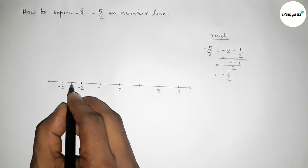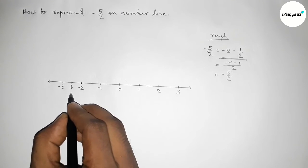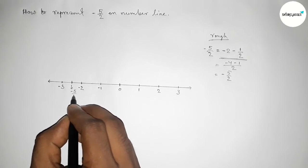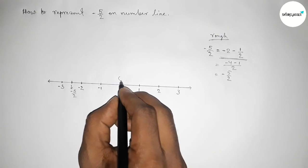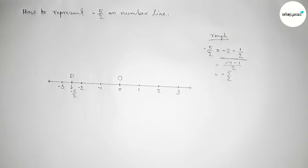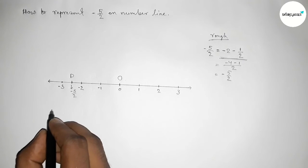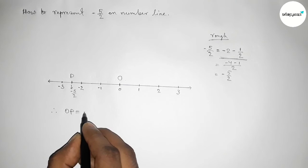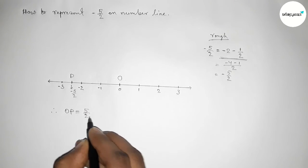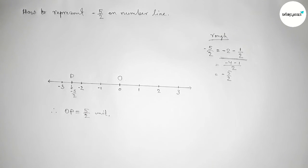So this is total minus five by two on number line. Now taking point here O and here P. So therefore OP equals to we can write five by two unit, since we know that the distance is always positive.